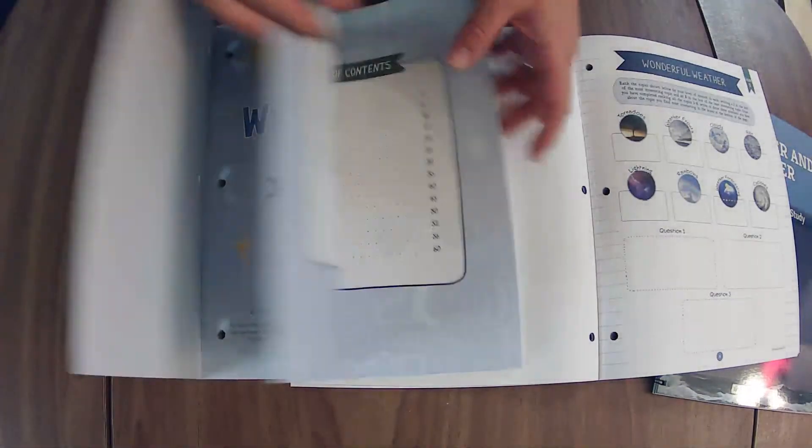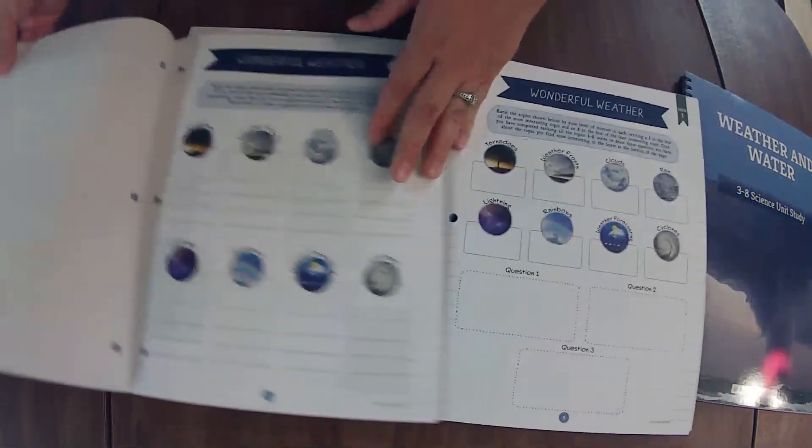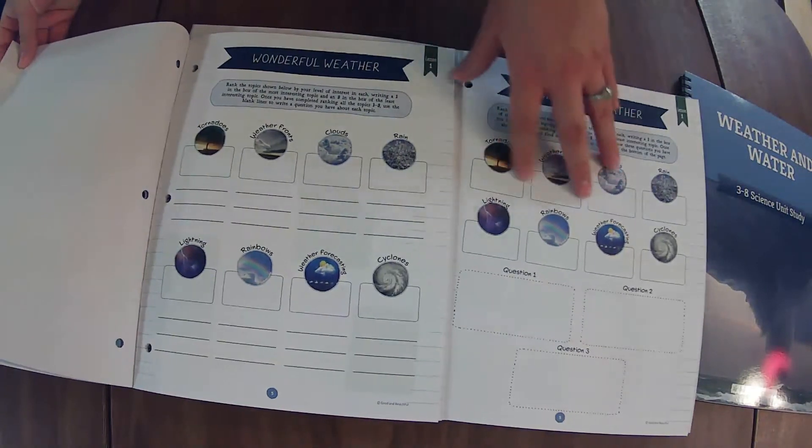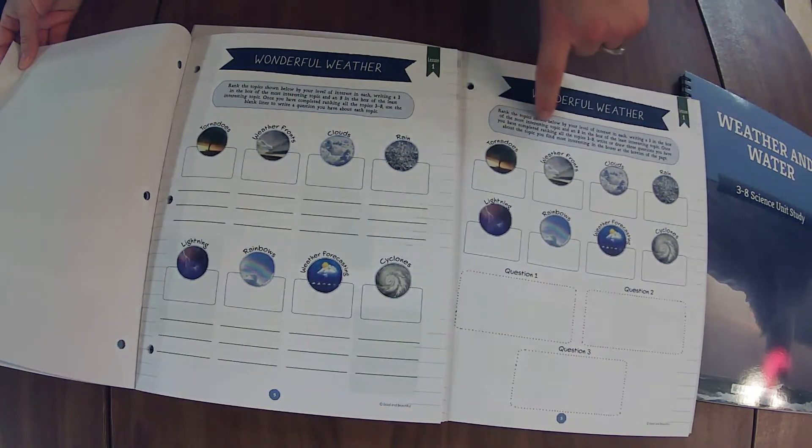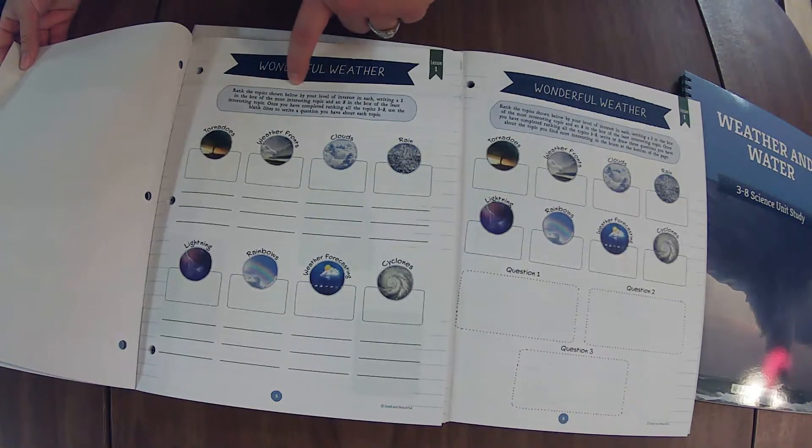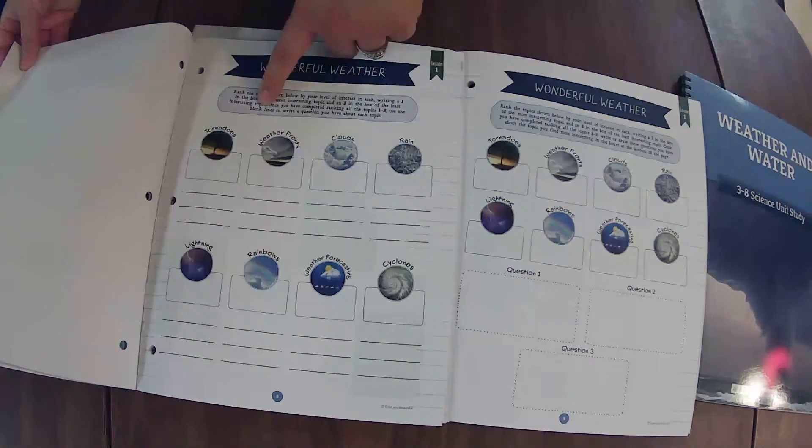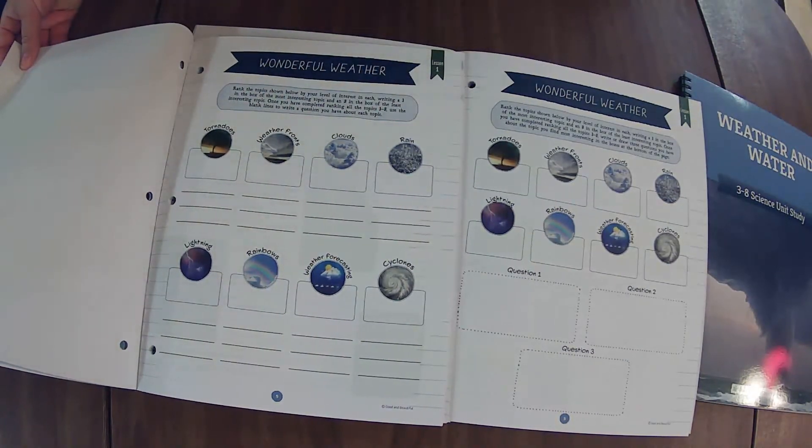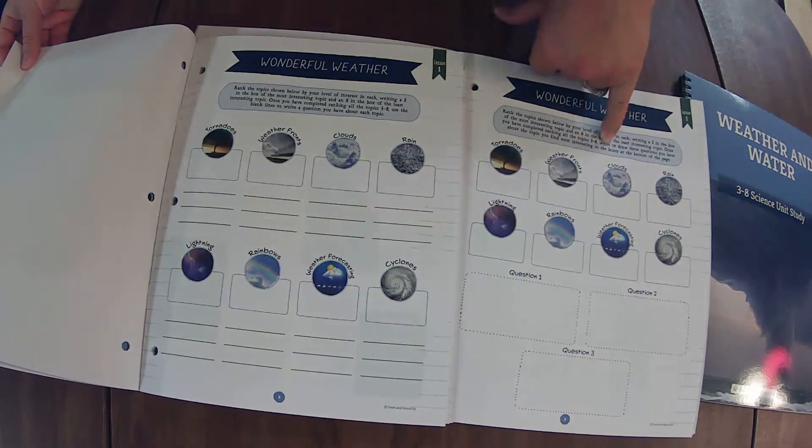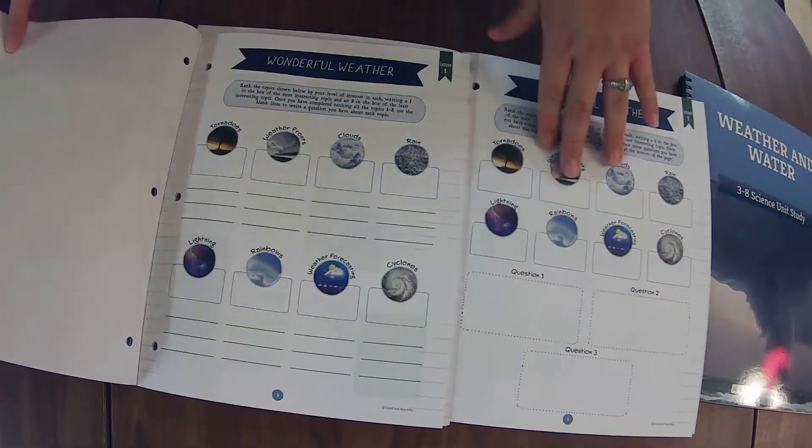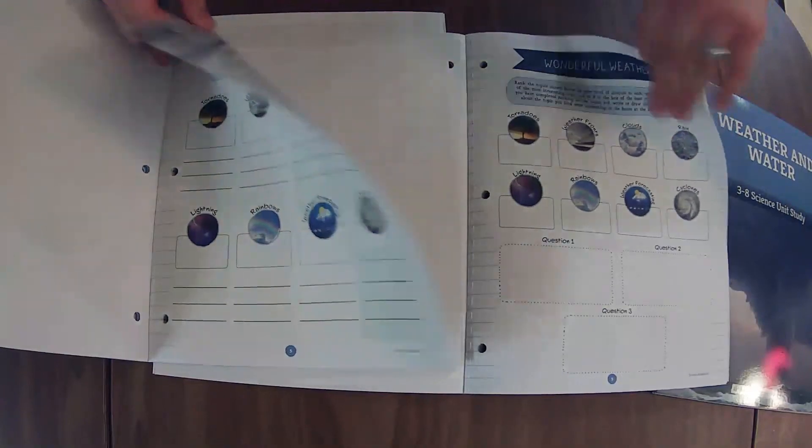So this one has every lesson listed because it also has the lesson extensions built right in, which I will show you. So here you have just visually different. Rank the topic shown below by your level of interest in each. Here they have three questions based on the top three most interesting items, and then over here, they want the question for each one. So there's a level of difference there.